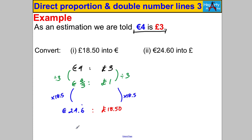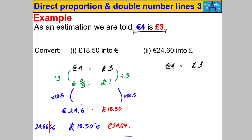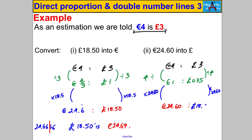Multiply both sides by 18.5: four-thirds × 18.5 = 24.6̄ euros. Give the answer to two decimal places: £18.50 = €24.67. For the reverse — €24.60 to pounds: write 4 euros to 3 pounds, divide both sides by 4 to get the unit rate of £0.75 per euro, then multiply by 24.60 to get £18.45.